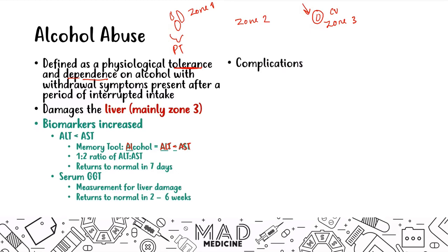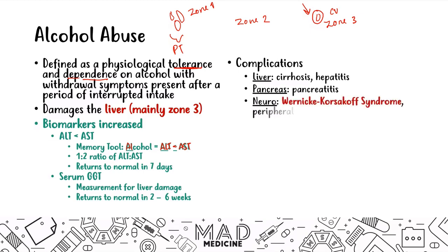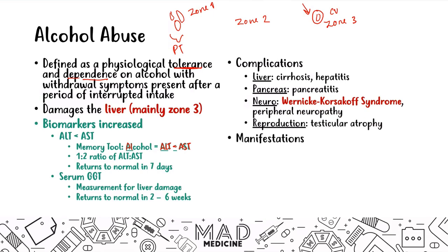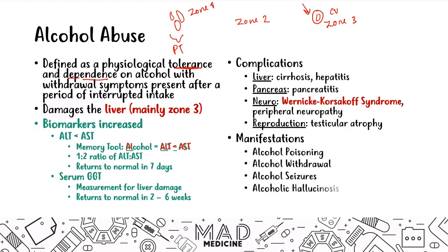When it comes to complications, in the liver you'll have cirrhosis and hepatitis. The pancreas is at higher risk for pancreatitis. Neural symptoms include Wernicke-Korsakoff syndrome and peripheral neuropathy. The reproductive system can show testicular atrophy. Alcohol abuse can also manifest as alcohol poisoning, withdrawals, seizures, hallucinations, and the most feared sequela: delirium tremens. All of this is very high yield for Step 1.